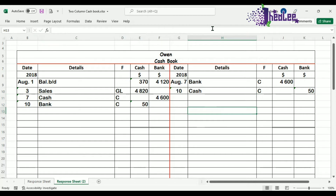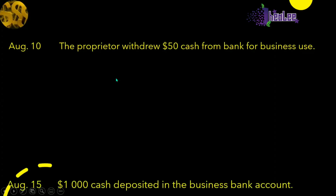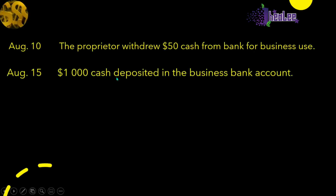Let's look at another transaction. That is August 15th: $1,000 cash deposited in the business bank account. The items affected by this transaction are cash, because the cash is being placed into the business bank account, and the other item is bank. Because bank and cash are affected by the same transaction, that is a contra-entry.